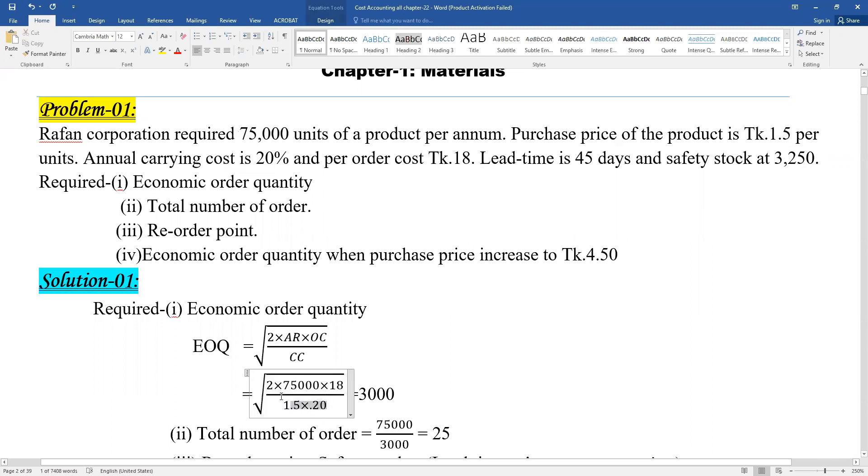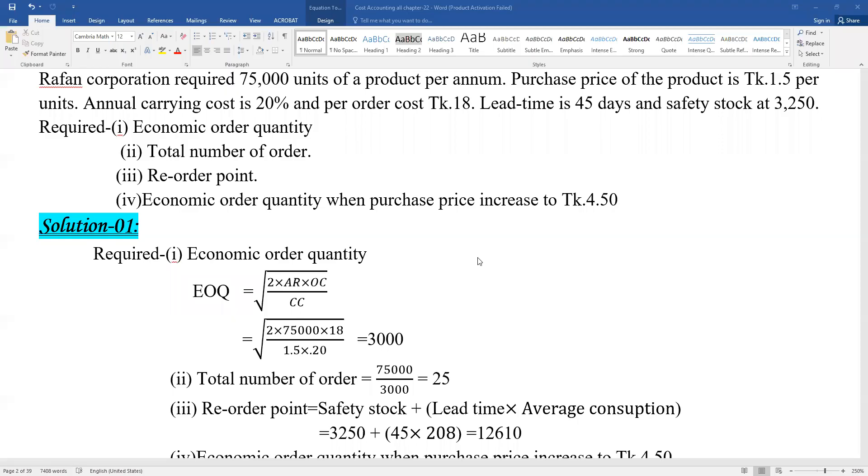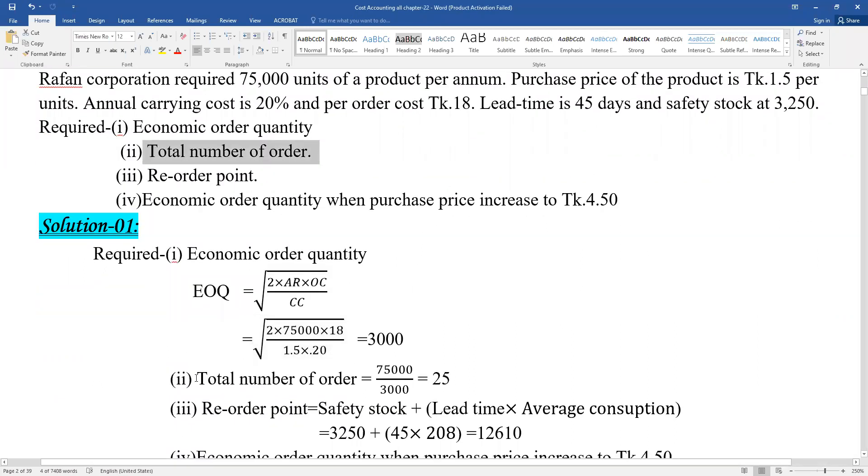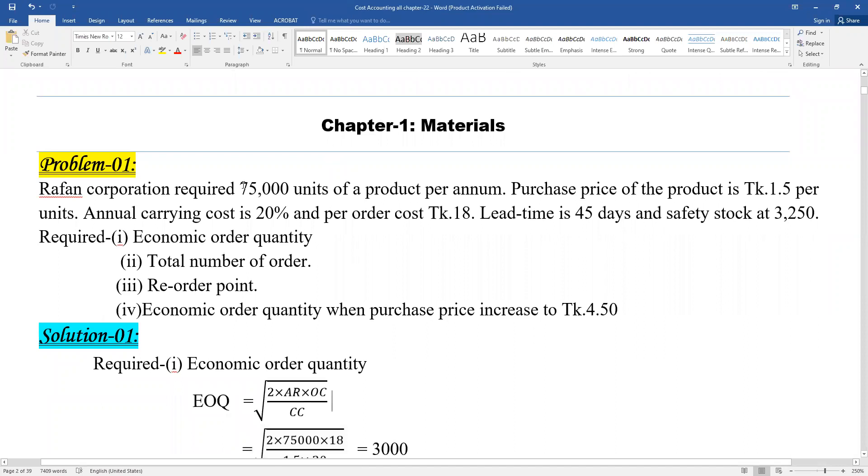Total number of orders: The annual demand is 75,000 units divided by EOQ of 3,000 equals 25 orders.